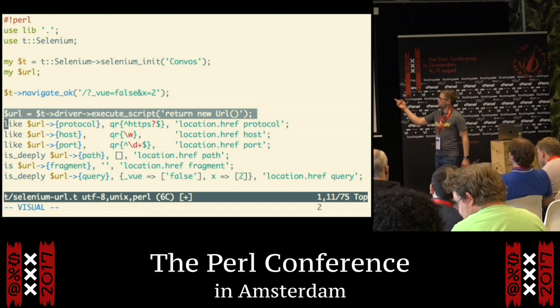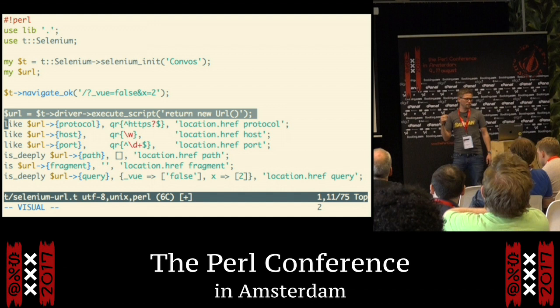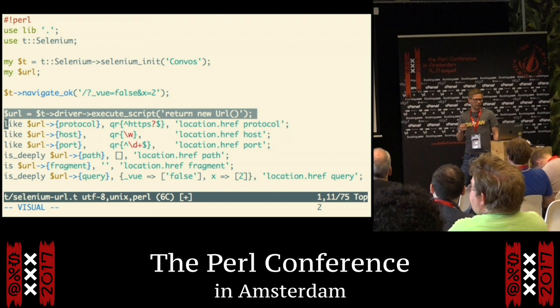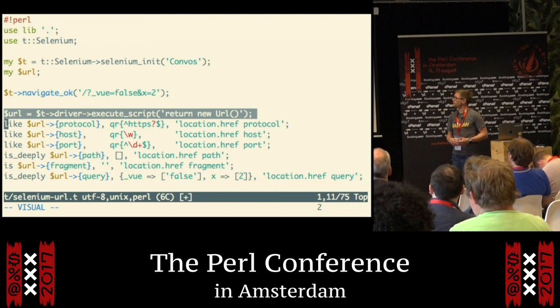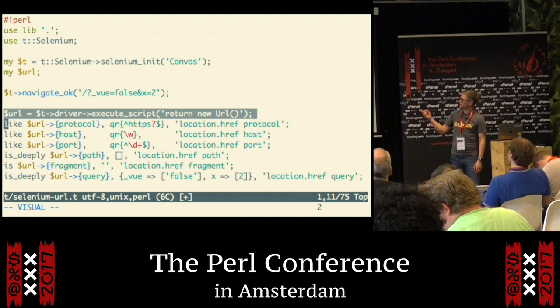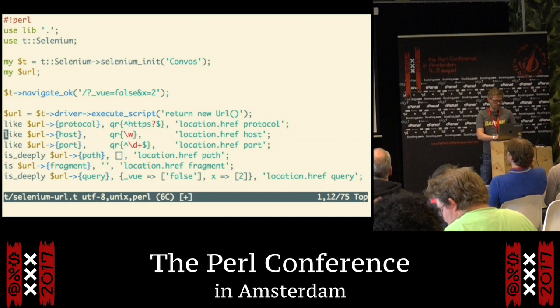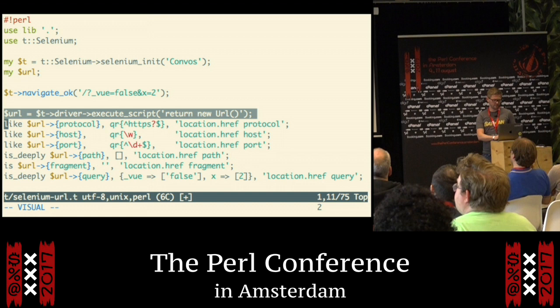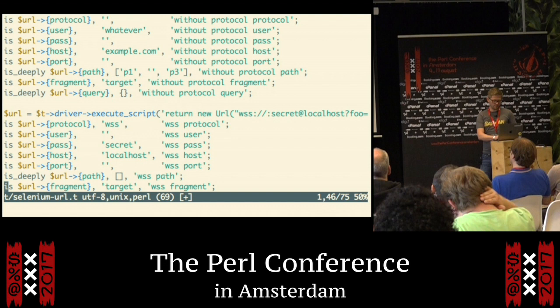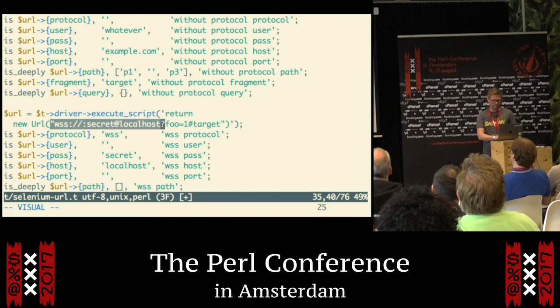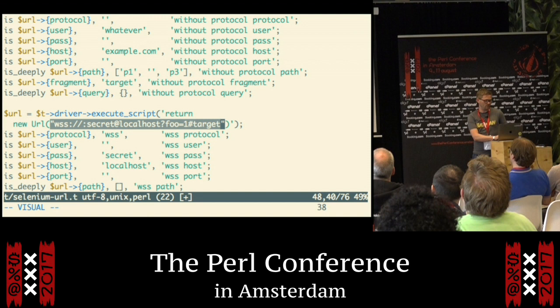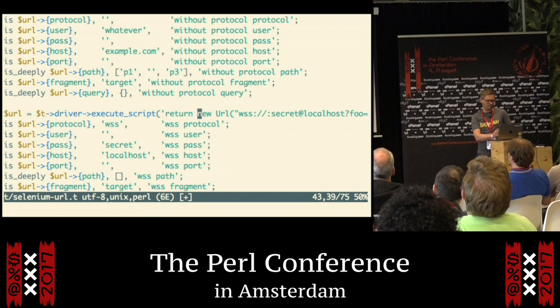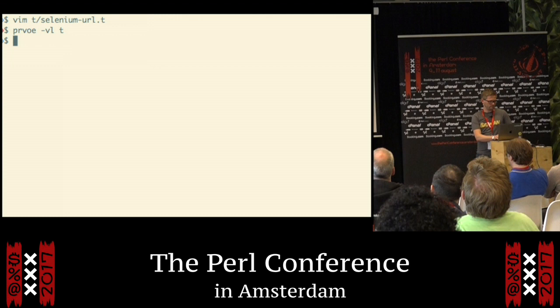When you do execute_script, you can see that you have return new URL there. It's going to try its best to make that return value into a Perl data structure. I'm not sure how it's going to behave with functions and stuff like that, but anything that looks like JSON is going to be turned into a Perl data structure. So you can use normal test methods like is or is_deeply. You can do whatever you like in JavaScript space and then run the tests in Perl. Most of these URLs were copy-pasted from the Mojo test suite to see if my library handles them the same way.